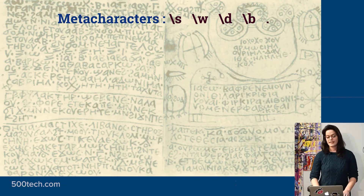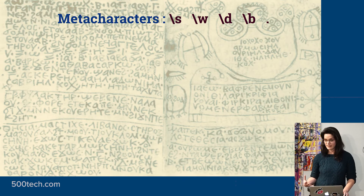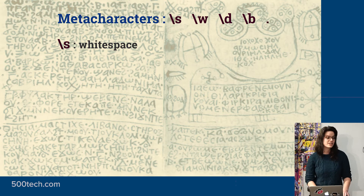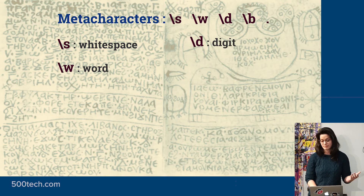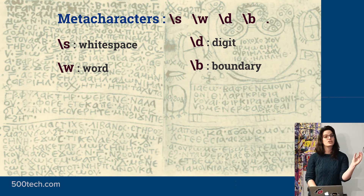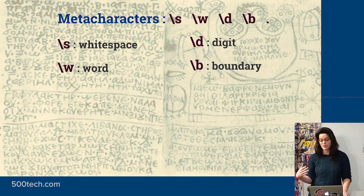There are meta characters — a backslash with a letter in front of it that covers a broad range of what you can match against. There's whitespace, which includes spaces, tabs, and new lines. There's word, which is actually any alphanumeric character and an underscore. There's digit, which is obvious. There are word boundaries, which are really cool — put the boundary in front to ensure the word starts with this pattern, at the end to ensure it ends with the pattern, or wrap the whole thing for an entire word match.